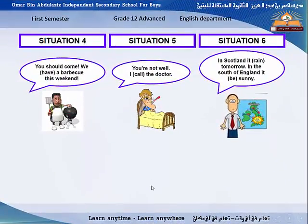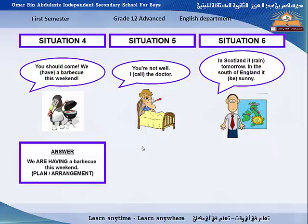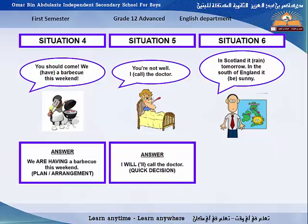Situation 4: 'You should come. We are having a barbecue this weekend.' The answer is 'We are having a barbecue this weekend.' Here we have a plan or arrangement, so we use the present continuous tense. Situation 5: 'You are not well. I'll call the doctor.' The answer is 'I will call the doctor.' This is a quick decision — when you saw him not well, you just decided to call the doctor right now.